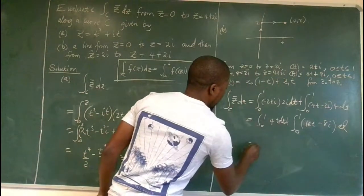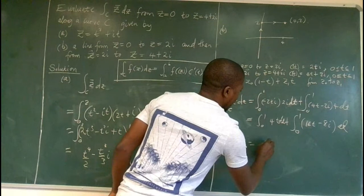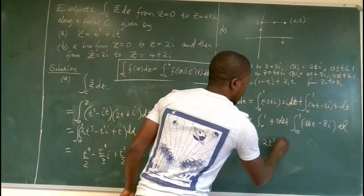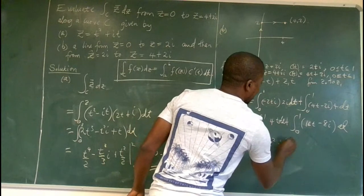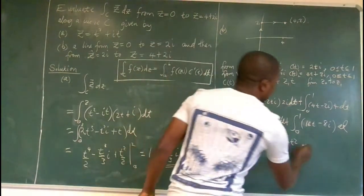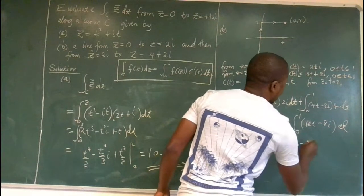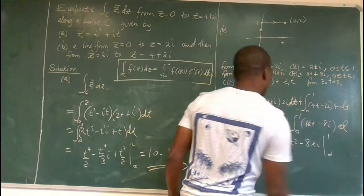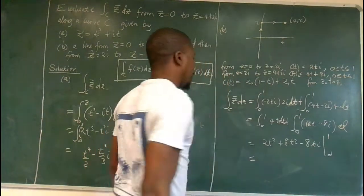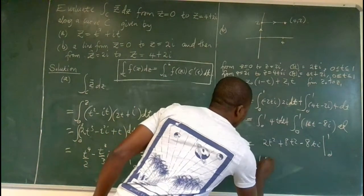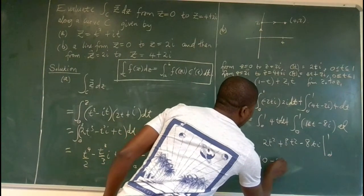So we'll end up with 4t squared over 2, that's 2t squared, plus 8t squared. So if we do the math, then we have 10 minus 8i.